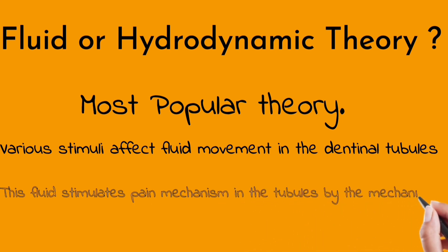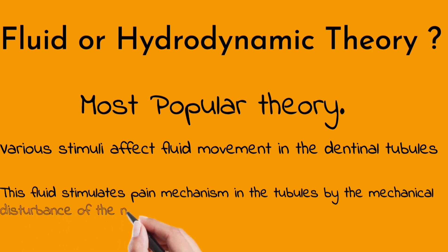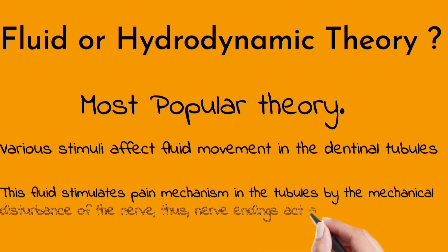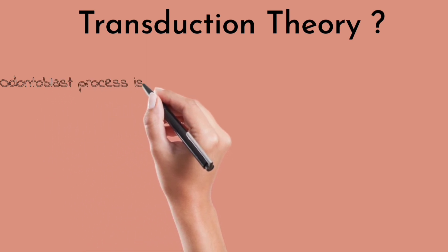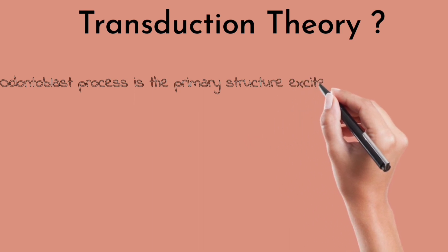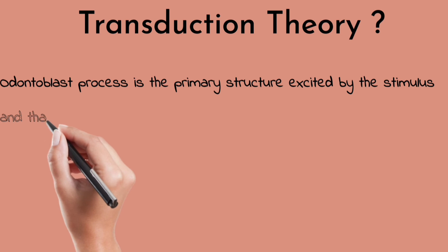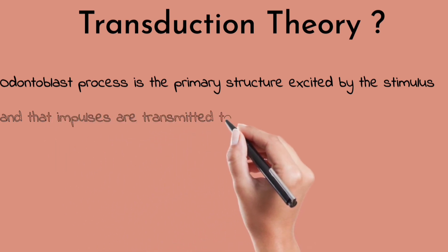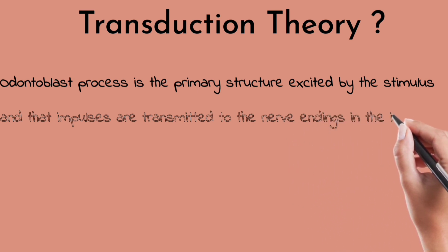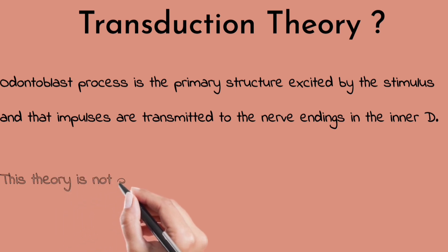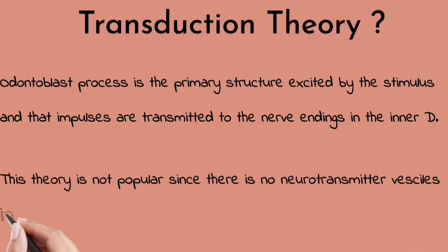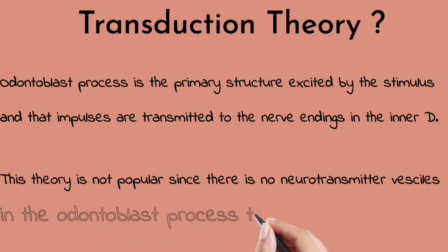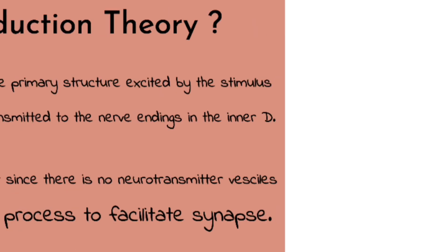The transduction theory states that the odontoblast process is the primary structure excited by stimuli, and that impulses are transmitted to the nerve endings in the inner dentine. However, this theory is not popular because there is no neurotransmitter in the odontoblast process to facilitate signal transmission.